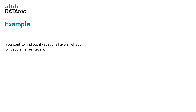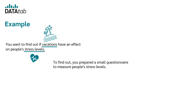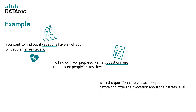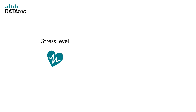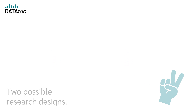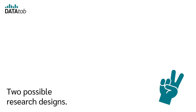Let's assume you want to find out if vacations have an effect on people's stress levels. To analyze this question, you've prepared a small questionnaire to measure people's stress levels, and you ask people before and after their vacation about their stress level. So you have two variables: stress level and vacation. Vacation has the two levels: before and after vacation. Now there are two possible research designs.